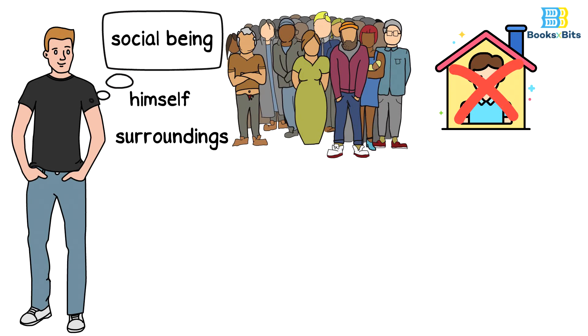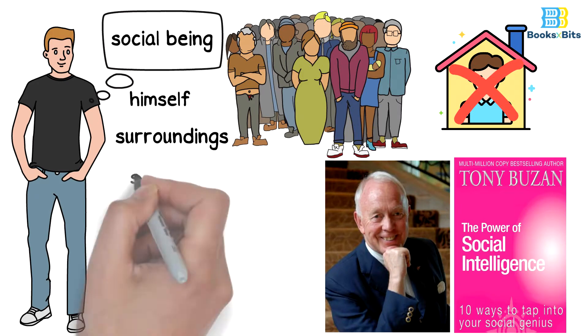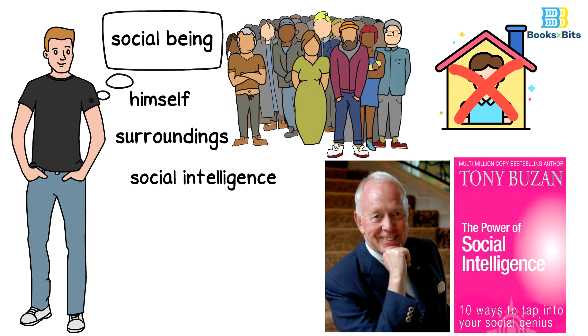That is why the book The Power of Social Intelligence by the author Tony Buzan highlighted the path to social intelligence, as intelligence had been a particular characteristic of the individual only.